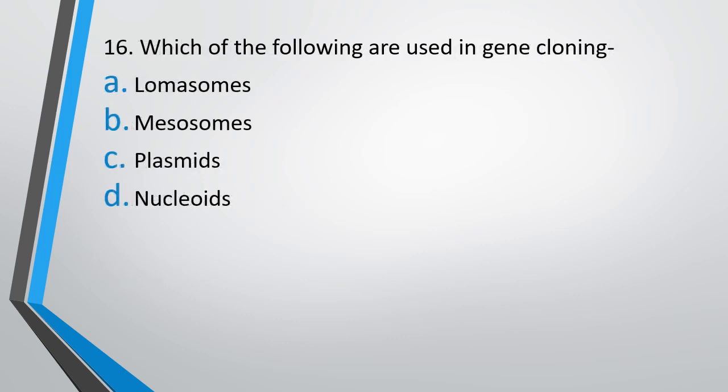Question No. 16: Which of the following are used in gene cloning? Lomasomes, mesosomes, plasmids, or nucleoids. The correct answer is option C, plasmids are used as vector or carrier of genes in gene cloning.